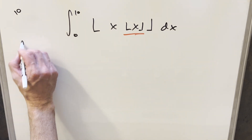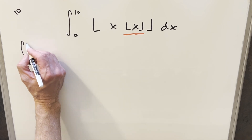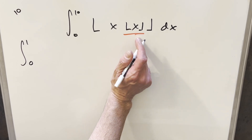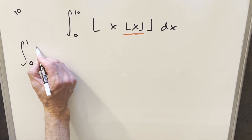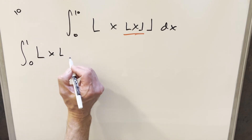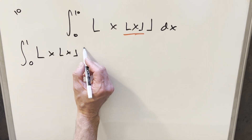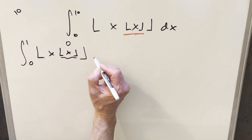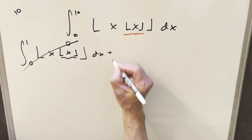What I want to do is use the same trick we've used with the floor function — I'm going to break it up so that we're going from 0 to 1, and 1 to 2. From 0 to 1, the floor of x rounds everything down to 0, so that piece becomes 0, and when we multiply it, it zeroes out everything. So this first integral just goes away.